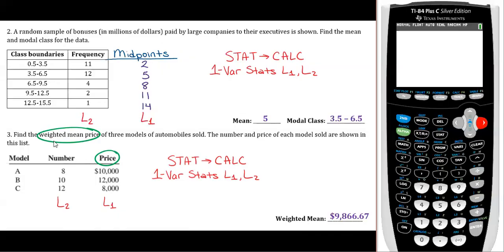So just remember, whatever you're finding the weighted mean of, that's your L1. The other variable is your L2. And you'll put that in your frequency list. And then just go to one-var stats. And you'll get your answer that way. All right, I hope that was helpful. And definitely let us know, either one of us, if you have any questions about the calculator. And we are more than happy to help you out.